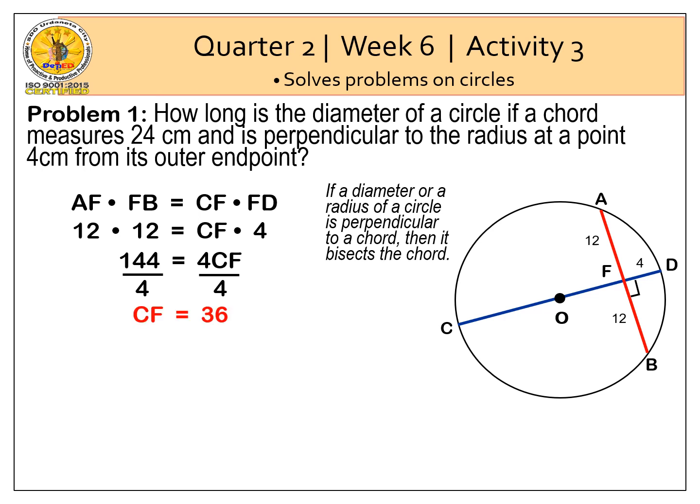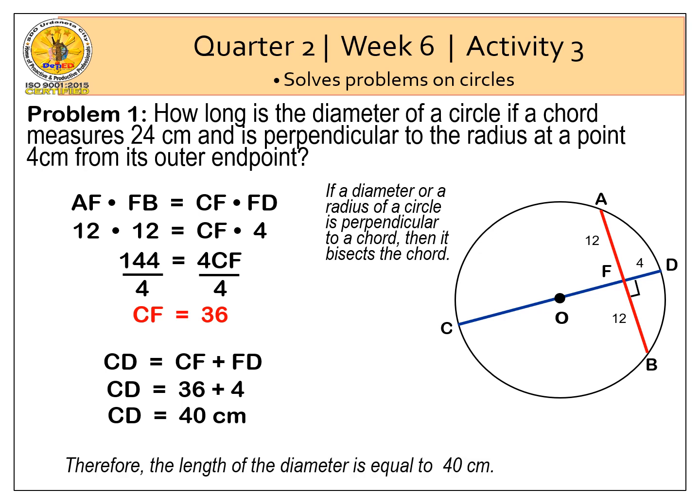Line segment CF therefore is equal to 36. We can now find the length of the diameter. So CD is equal to CF plus FD. So CF is equal to 36 and FD is equal to 4. Line segment CD is equal to 40 cm. Therefore, the length of the diameter is equal to 40 cm.